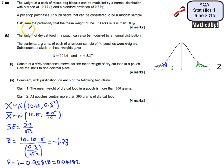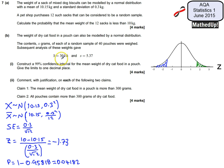So the probability that the mean weight of the 12 sacks is less than 10kg is 0.04182. For part B, the weight of dry cat food in a pouch can also be modelled by a normal distribution. A random sample of 40 pouches were weighed, giving x-bar = 304.6 and s = 5.37. We need to construct a 99% confidence interval for the mean weight and give our limits to one decimal place.